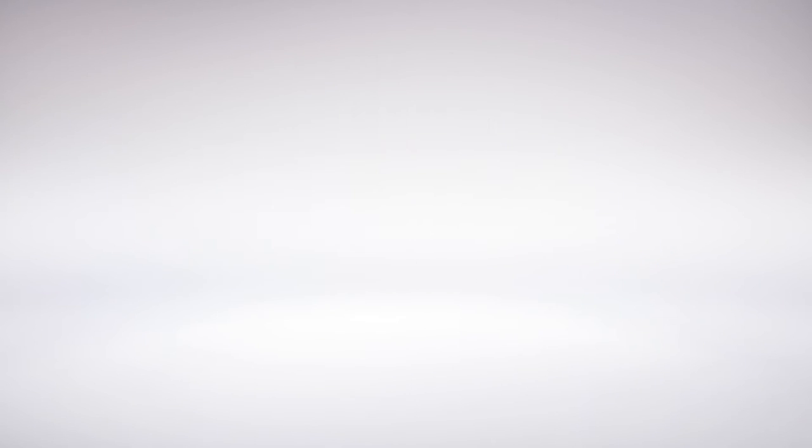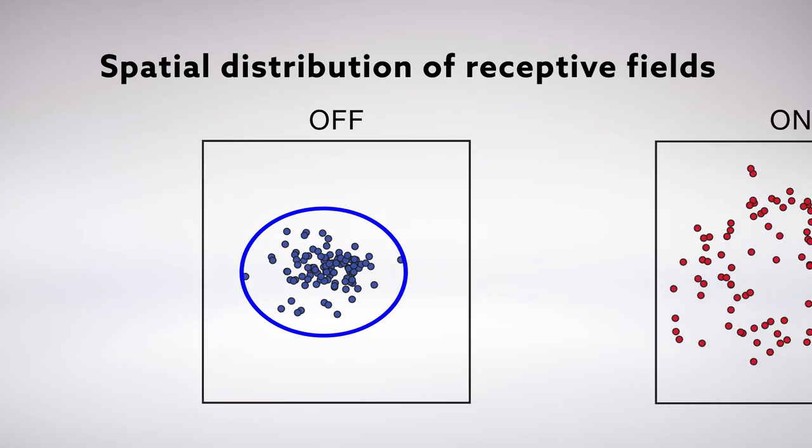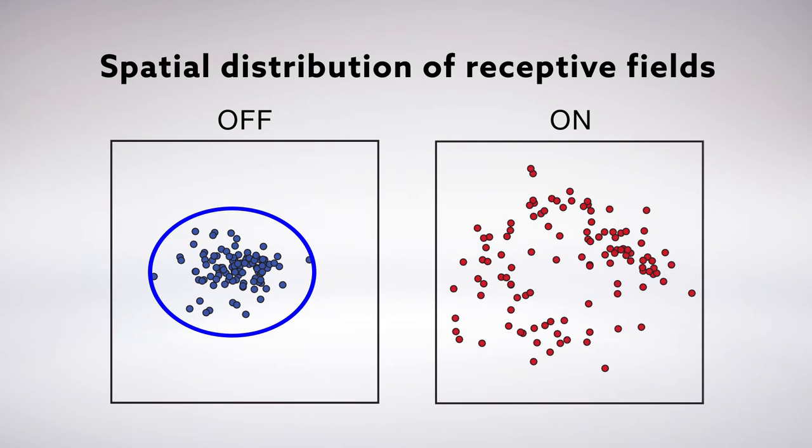They found the off responses were extremely precise, restricted to small regions of visual space and reflecting the known map of location. The on responses, however, appeared jumbled, spread out over a larger region of visual space.